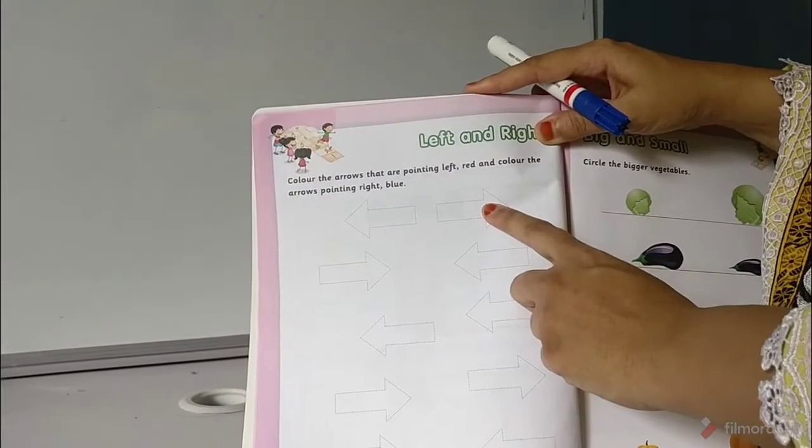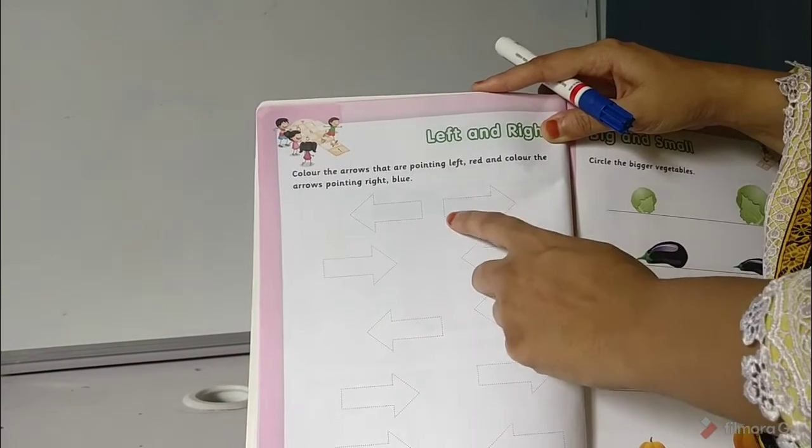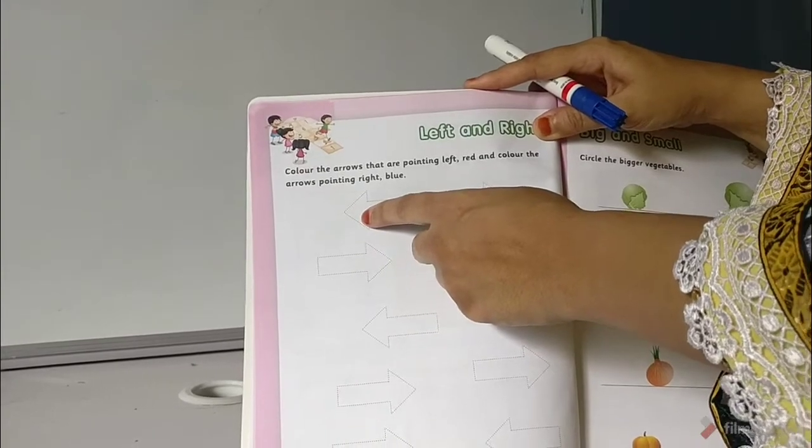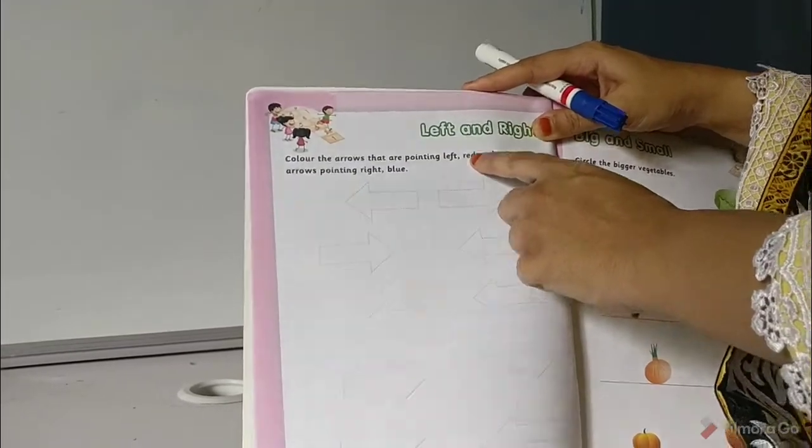So this is the arrow pointing towards the right. For this you will color it blue, and this is the arrow on the left side. So it will be which color? It will be red color.